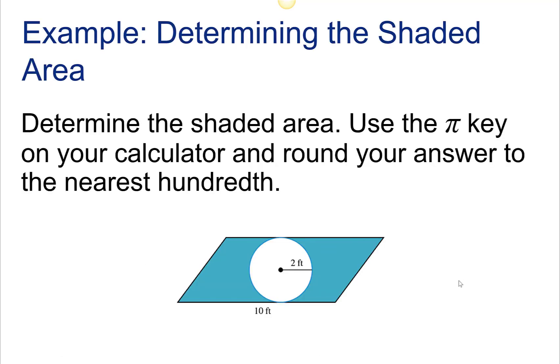Determining the shaded area. If you have a figure where one figure is superimposed on another, and there's a shaded region to determine, here's how you do it. Find the area of the larger region and the area of the smaller region. The smaller region is being cut out, so you're going to subtract the area of this circle from the area of the parallelogram. Use the pi key on your calculator and round to the nearest hundredth, which means two decimal places.